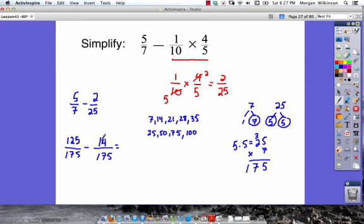125 minus 14. If you can do this with mental math, you don't need to show this part of the problem in your notes. That's going to be 111. So we get 111 over 175.